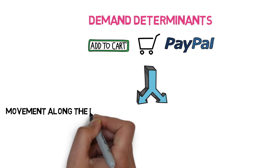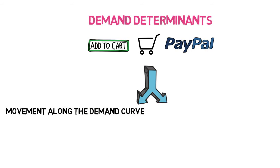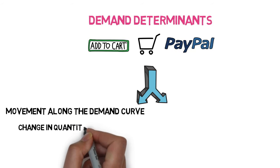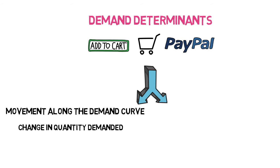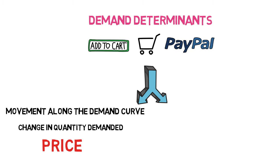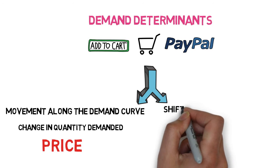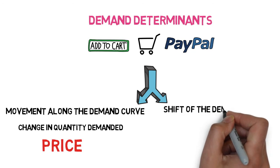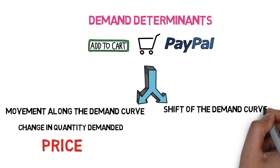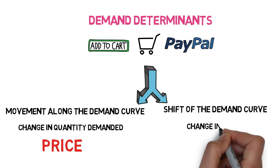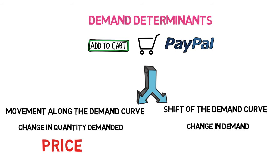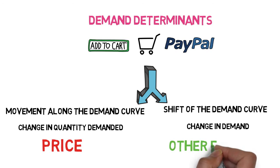A price change that affects a customer's decision to buy a product is called a movement along the demand curve. So in graphic form, we move along the demand curve based on a price change, and this is called a change in quantity demanded, which is different from a change in demand and is due solely to price. By contrast, a shift of the entire demand curve — left or right on our graph — is called a change in demand, and it's due to a range of other factors beyond price.